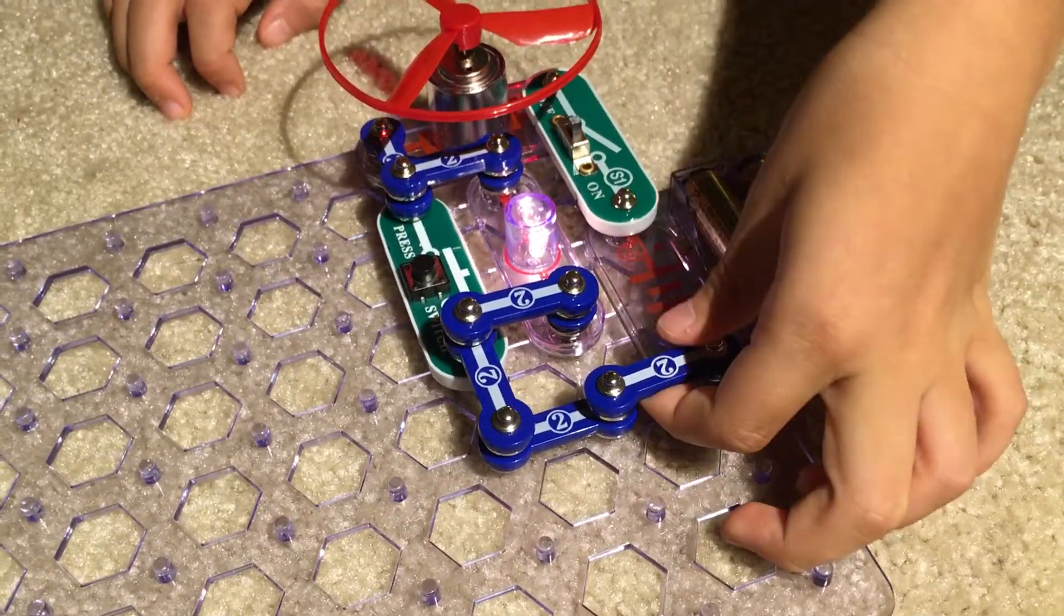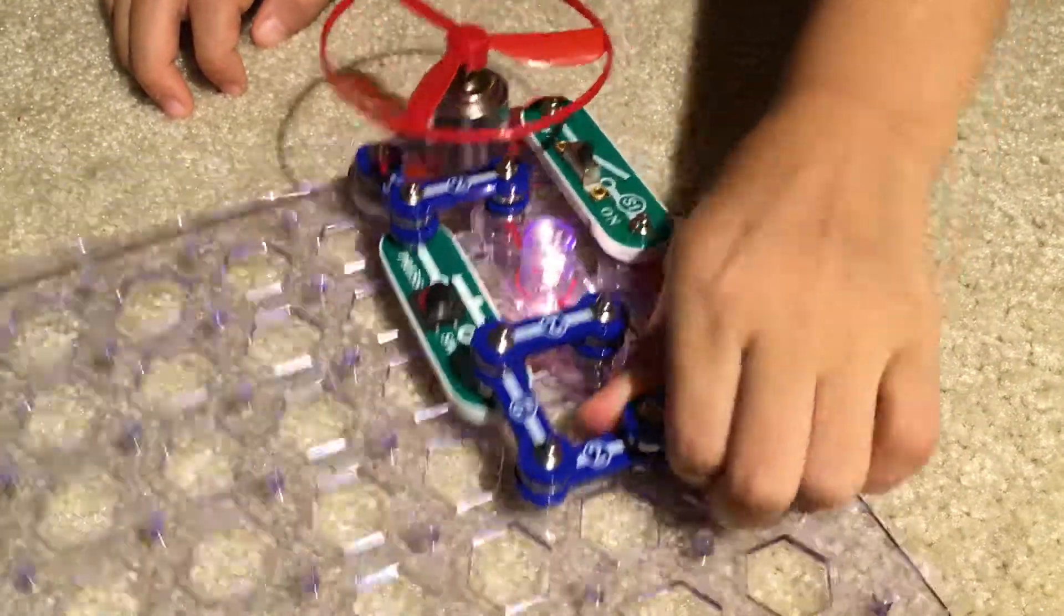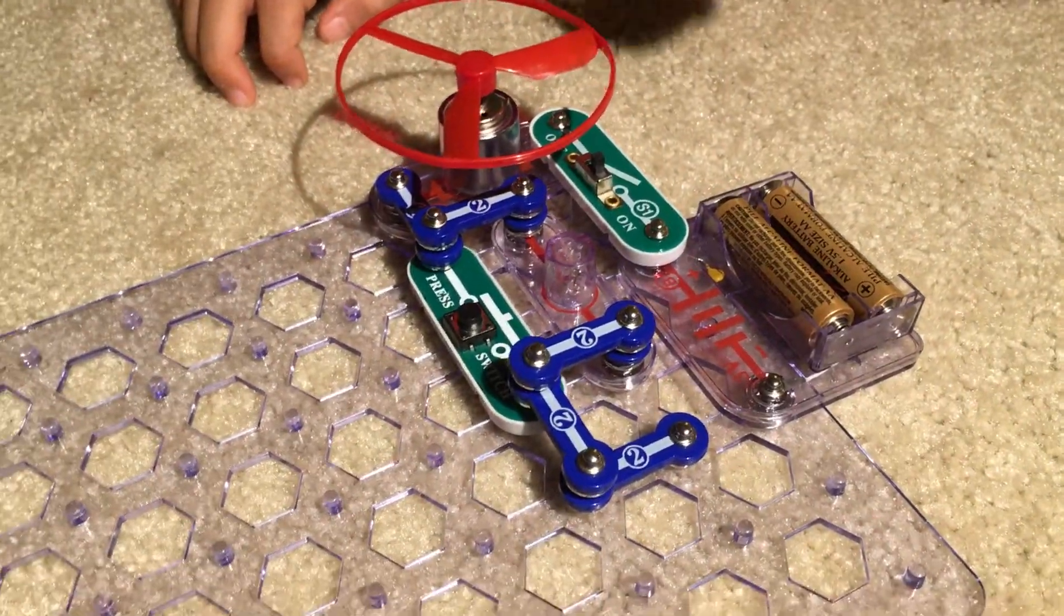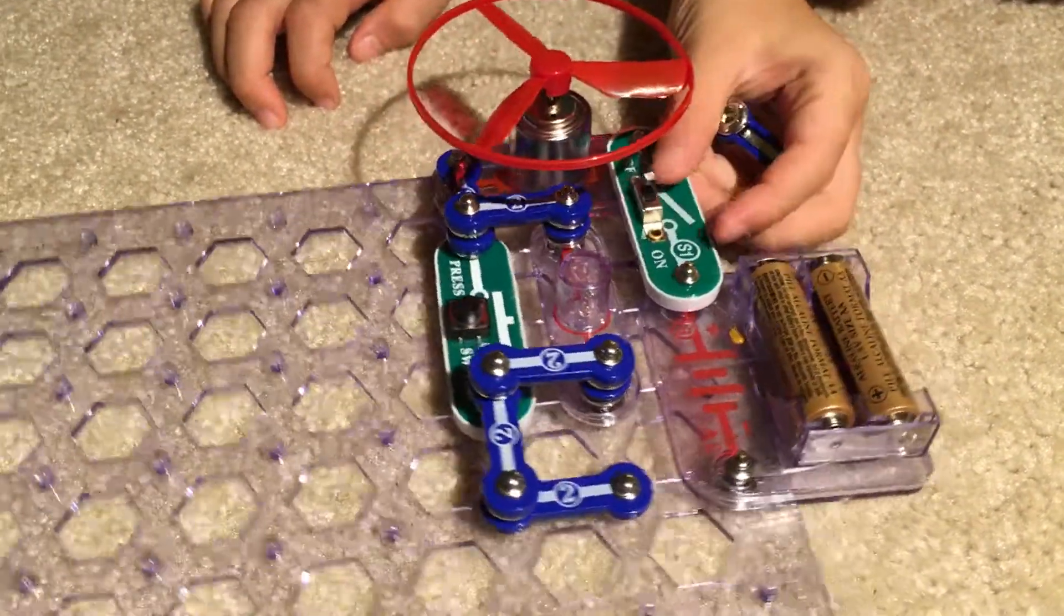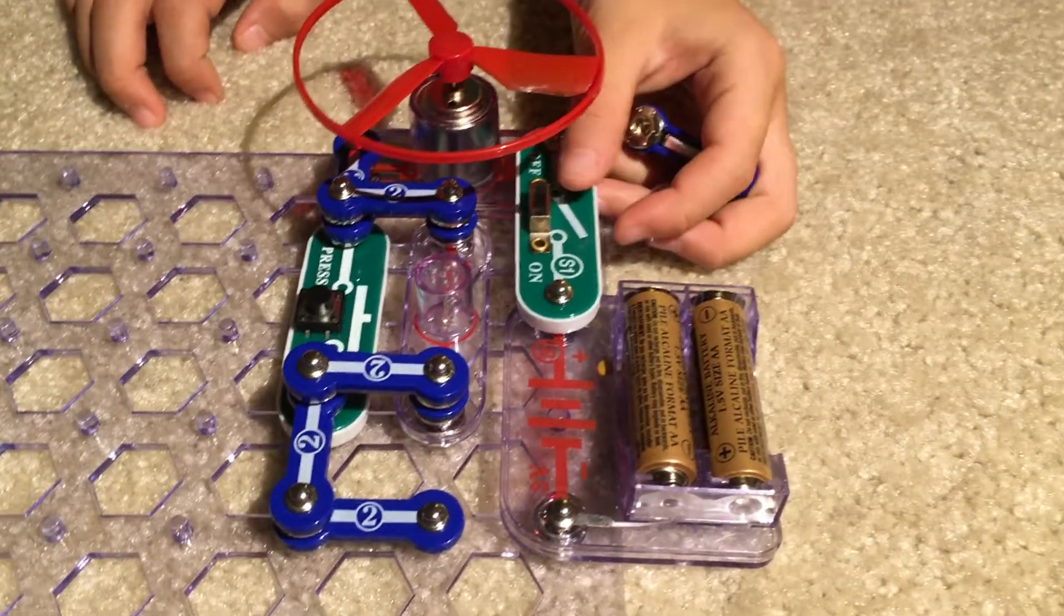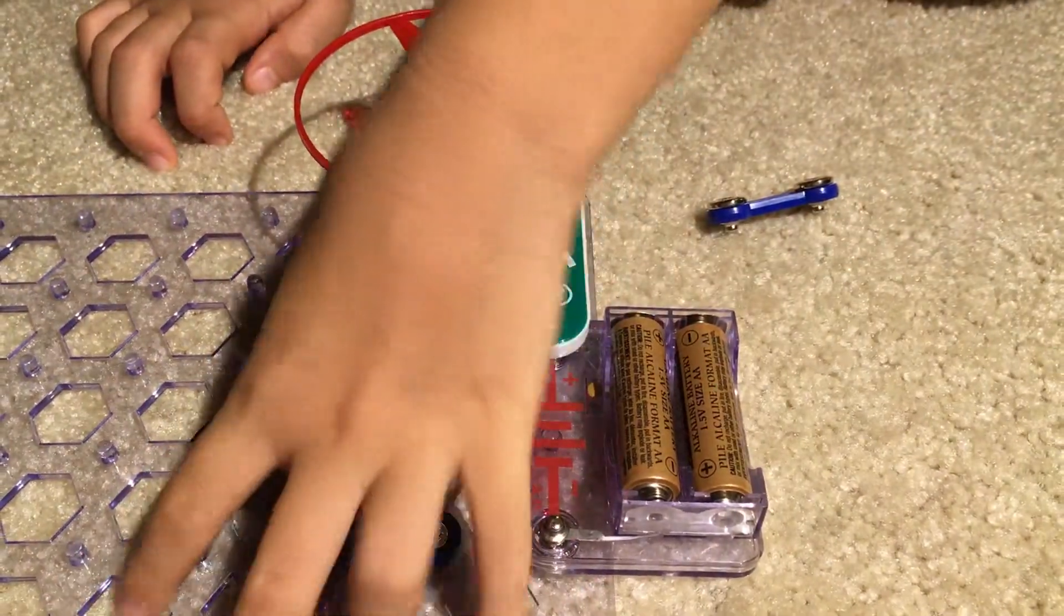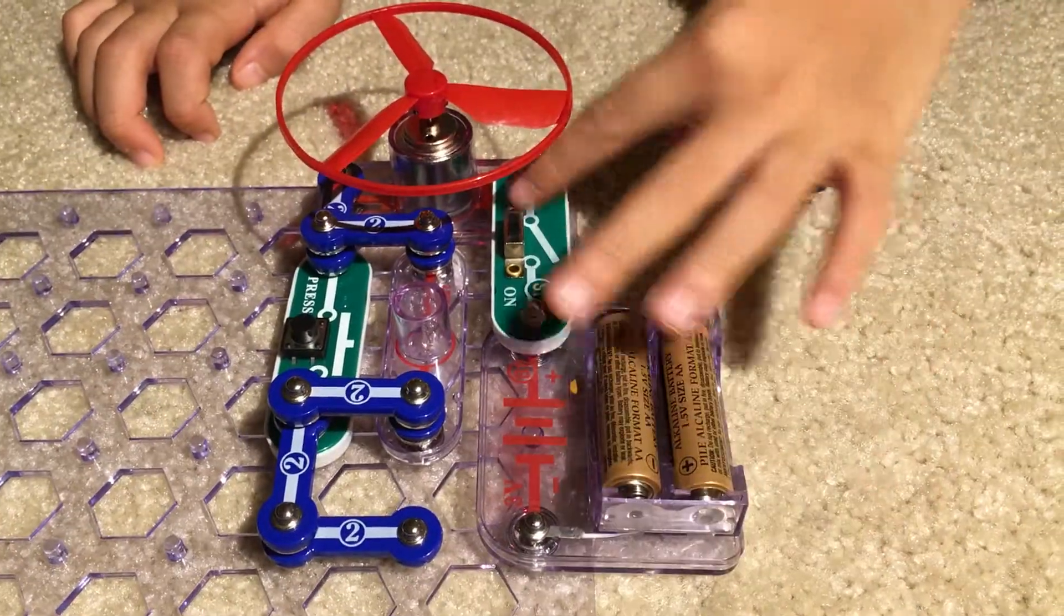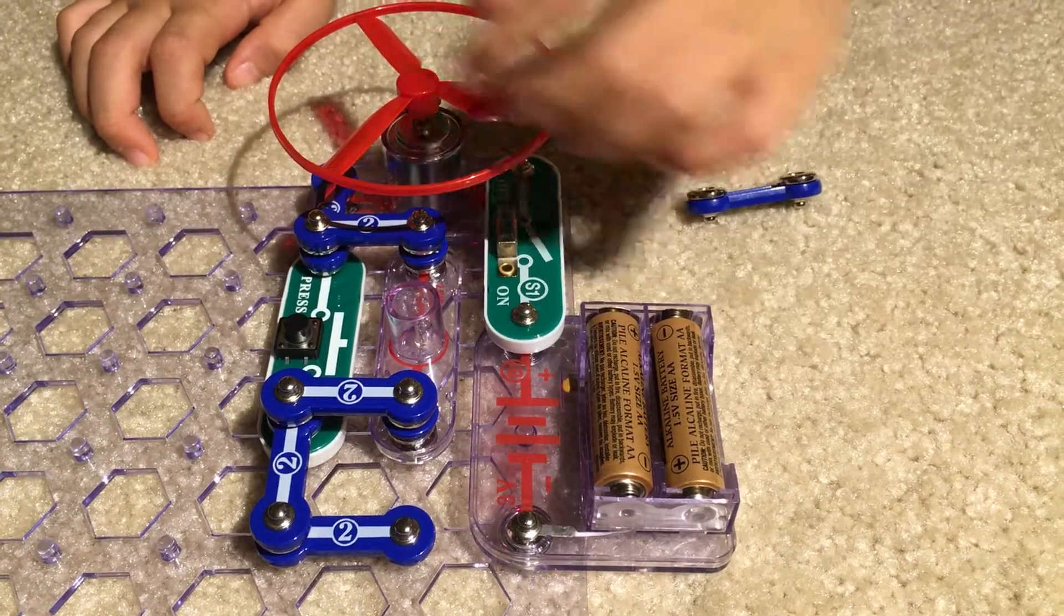If that happens and the current is too high, the fuse breaks because it burns out and the whole circuit breaks down. It's not going to work even if you reset it, turn it on, or press this switch, because all the ways back to the battery are broken.